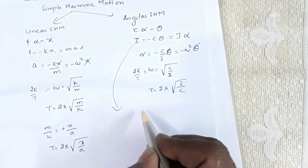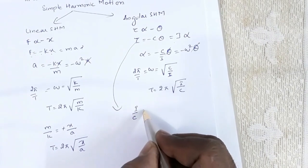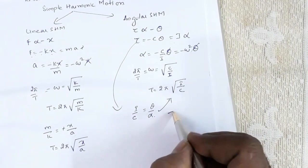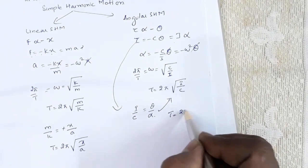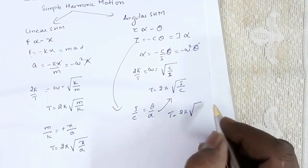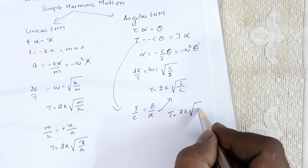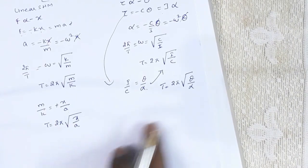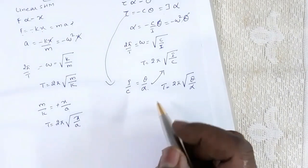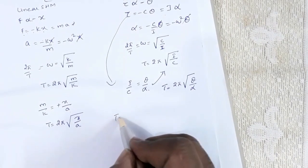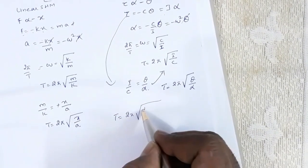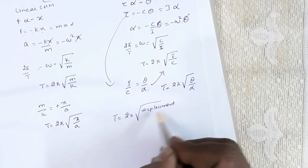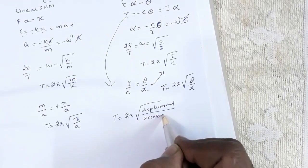Similarly, I/c = θ/α, so substituting this, T = 2π√(θ/α). So I can generalize this as T = 2π√(displacement/acceleration). This is a general relation.